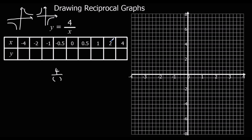So here I've got 4 over 4 for the first one — 4 over 4 is 1. Then 4 over 2 is 2, and 4 over 1 is 4. Then 4 over a half is 8.